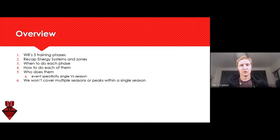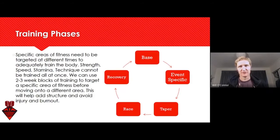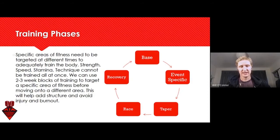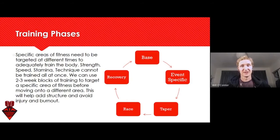These are the five training phases: at the fundamental level we've got base, event specific, taper, race, and recovery. There are often a lot of phases thrown in between base and taper, and this can really confuse people when you have various endurance events and different seasons or multiple races or one singular large ultra. I like to use just 'event specific' and we can target the specifics of our event in a few different ways.